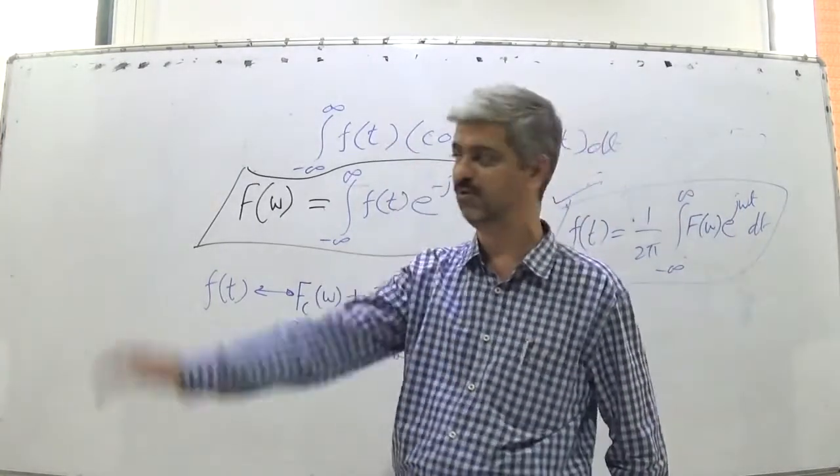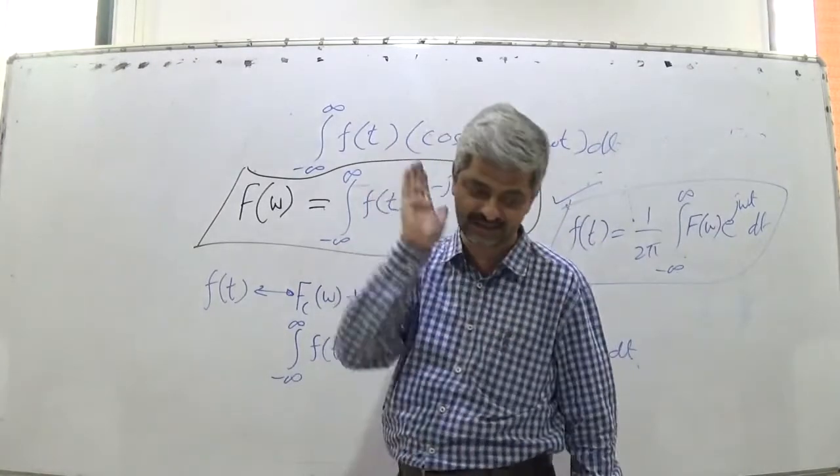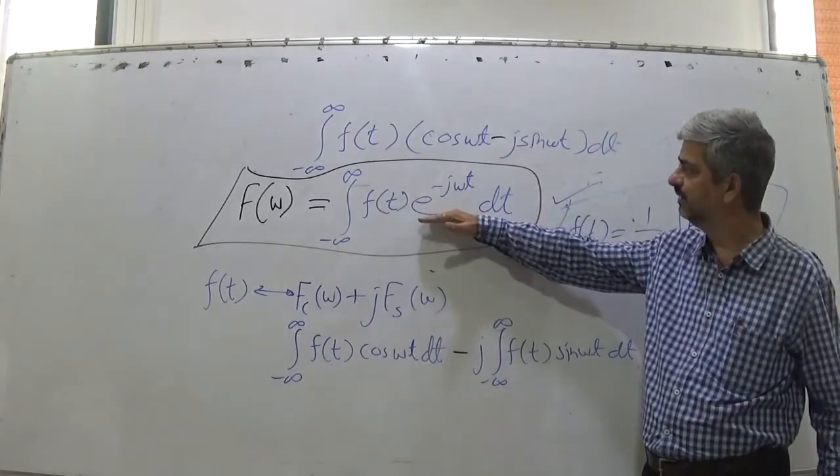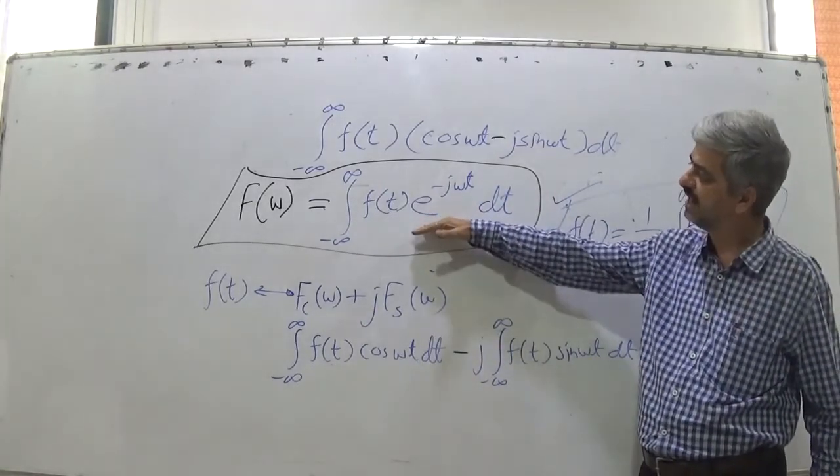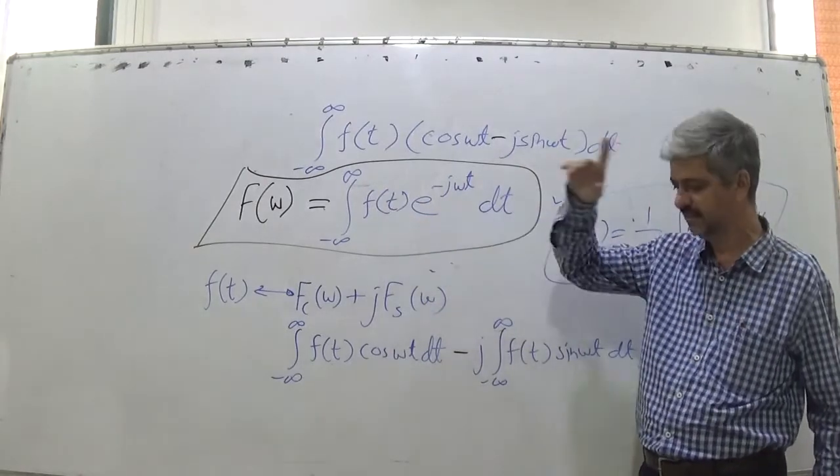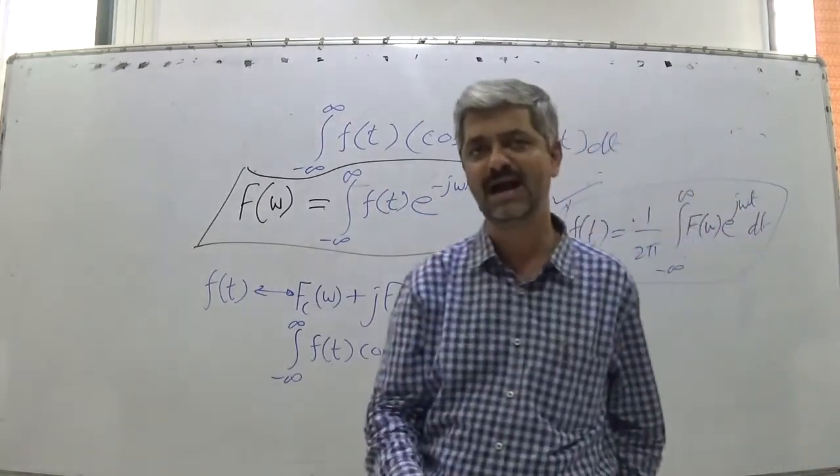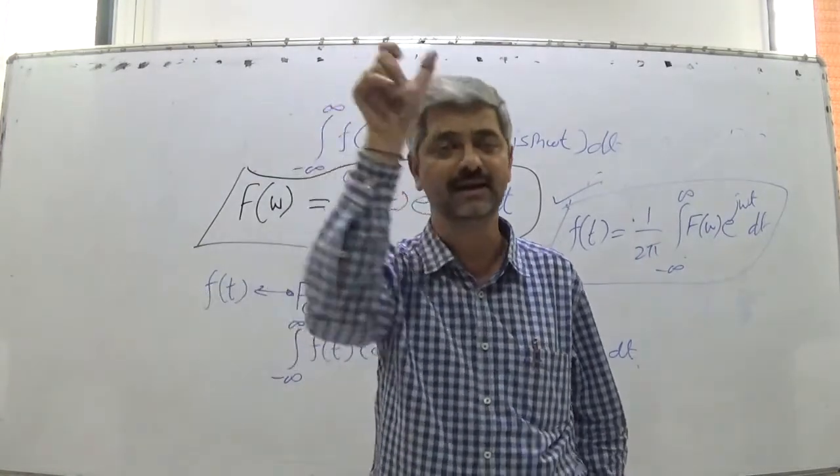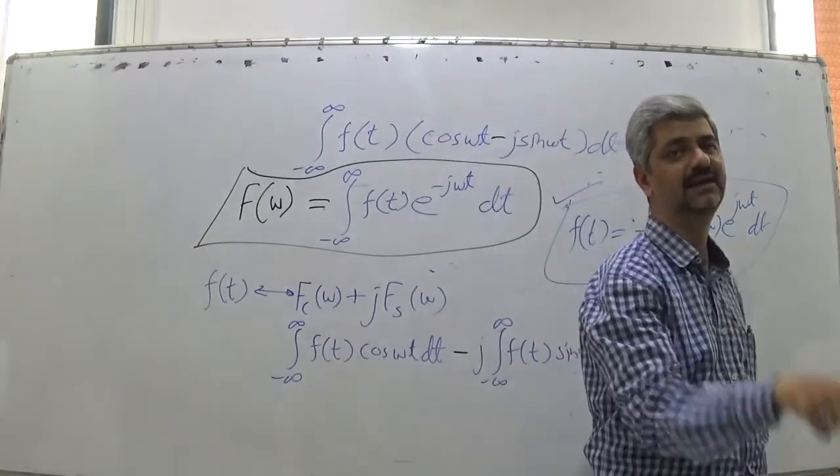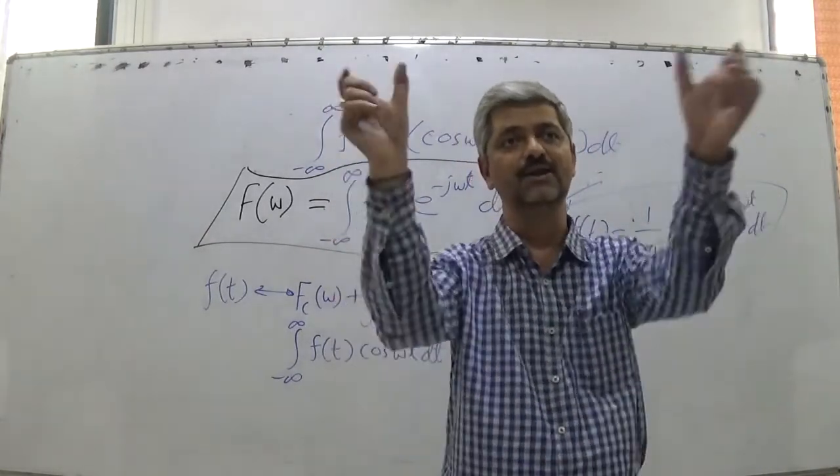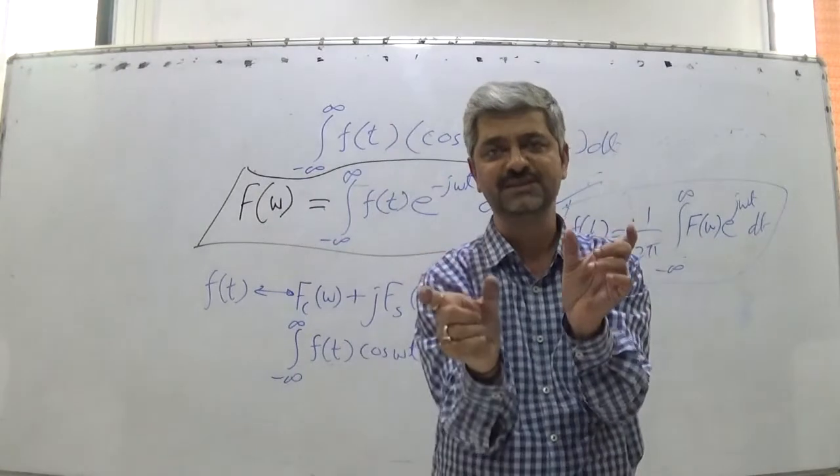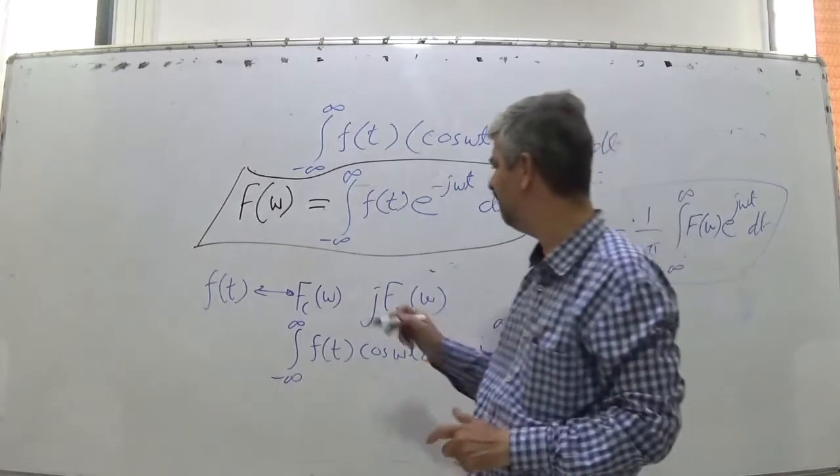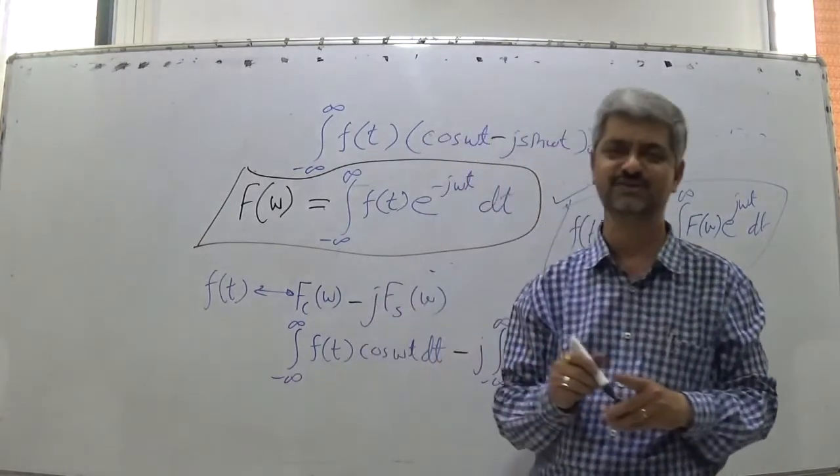So this is Fourier transform. I again repeat that this is difficult to understand. Therefore, never use this. ∫[-∞ to ∞] f(t)cos(ωt)dt, you get cosine transform. ∫[-∞ to ∞] f(t)sin(ωt)dt, you get sine transform. And the ordered pair Fc(ω) - just it is expressed, adjust one way - minus j·Fs(ω).